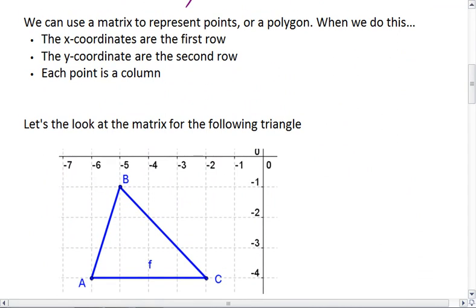Matrices are used for a number of reasons. One of the ways we can use a matrix is to represent points, or we can use it to represent a polygon. When we do this, we let the x-coordinates be the first row, the y-coordinates are the second row, and each point is a column.